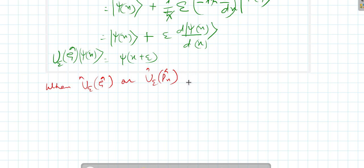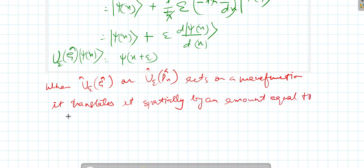U_ε(px) operates on a wave function, it translates it spatially by an amount equal to epsilon.